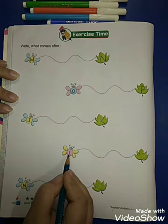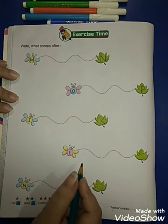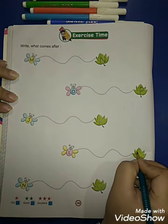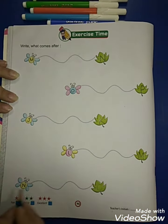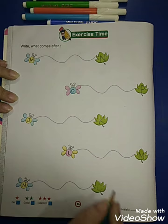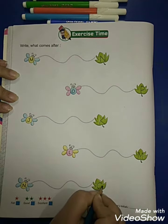Now which letter is this? L. So what comes after L? M. So I will write M like this. Now which letter is this? N. So what comes after N? O. So we will write O like this. Okay.